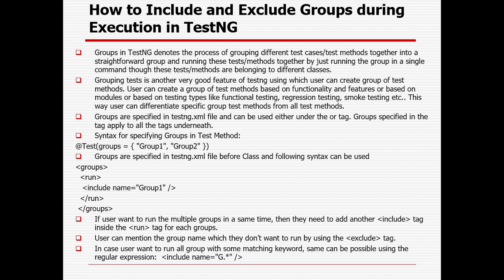Groups in TestNG denote the process of grouping different test cases or test methods together into a straightforward group and running them together with a single command, even when those test methods belong to different classes. A group can belong to different classes. You can create groups based on functionality, features, module, testing type like functional or regression, or based on critical severity — high, medium, or minor — so you can execute only the high-priority tests.